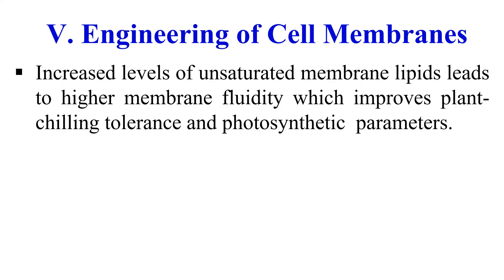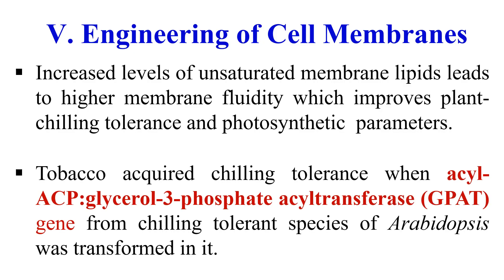The next strategy is engineering of cell membranes. Cell membranes are critical sites of injury during chilling, freezing, and thermal stress. By increasing the level of unsaturated fatty acids in the membrane lipids, we can improve chilling tolerance. For example, tobacco plants introduced with a gene for the enzyme acylglycerol-3-phosphate acyltransferase — taken from Arabidopsis thaliana — acquired tolerance from chilling stress. By these strategies, we can develop abiotic stress resistance plants.